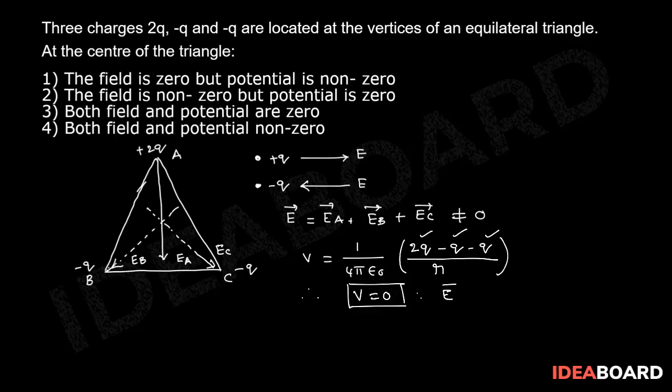Whereas, E bar is not equal to 0. Hence, the second option, the field is non-zero but potential is 0 is the right option.